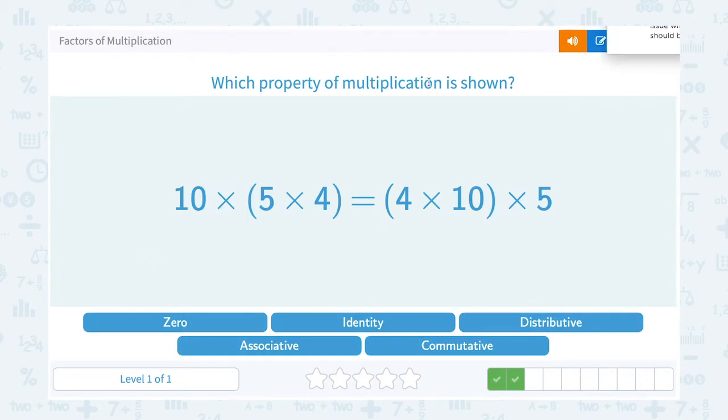Which property of multiplication is shown? 10 times, and then the quantity—that's how we say when we see this in parentheses—we say the quantity 5 times 4 is equal to the quantity 4 times 10 times 5.